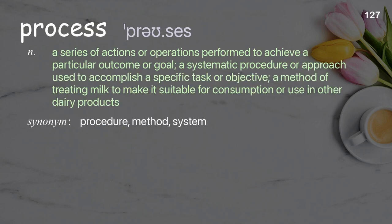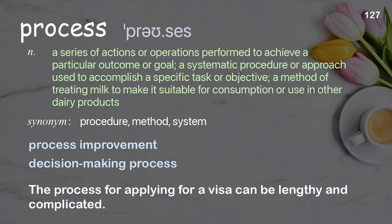Process: a series of actions or operations performed to achieve a particular outcome or goal; a systematic procedure or approach used to accomplish a specific task or objective; also a method of treating milk to make it suitable for consumption or use in other dairy products. Examples: process improvement, decision-making process. The process for applying for a visa can be lengthy and complicated.